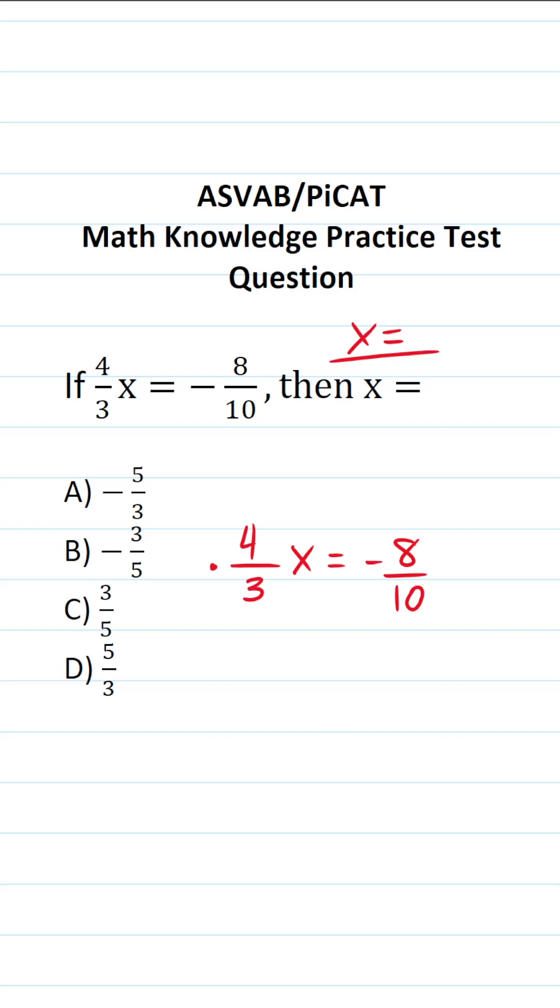To do that, we're going to multiply both sides of this equation by the reciprocal of four thirds, which is going to be three fourths. This crosses out here and here, leaving you with x over here.